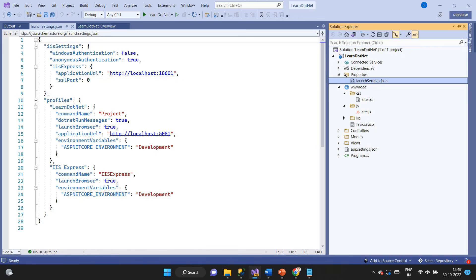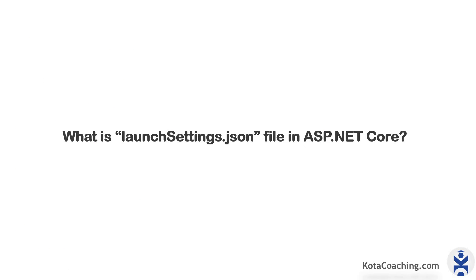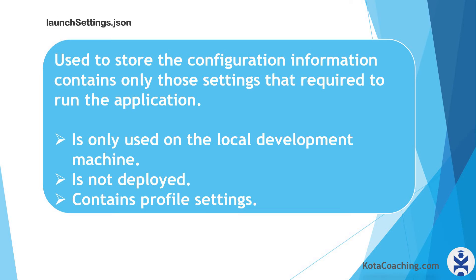Next, what is the launchSettings.json file in ASP.NET Core? The launchSettings.json file is used to store configuration information — specifically only those settings required to run the application. We put settings that are helpful to run the application. It is only used on the local development machine and is not deployed. It contains profile settings.